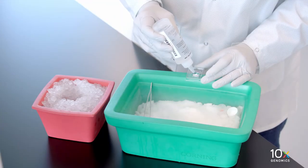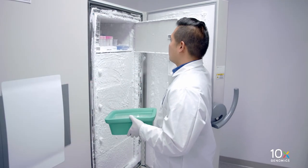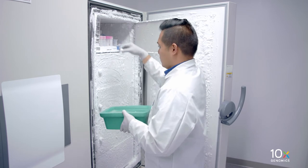Fill the labeled cryo mold with chilled OCT without introducing bubbles. Remove the frozen tissue from minus 80 degrees Celsius and transfer in dry ice.